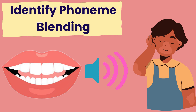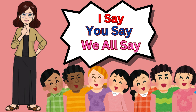Identify phoneme blending. When we read words, we say the sounds and blend them together. I will say three sounds — you say the three sounds back, then we will say them together and blend them into a word. Example: I say b-i-t. You say b-i-t. We say b-i-t. What word? Bet. I say w-e-b. What word? Web.